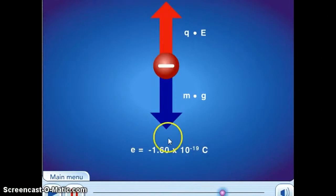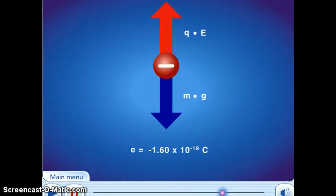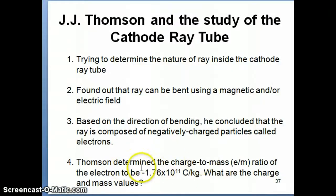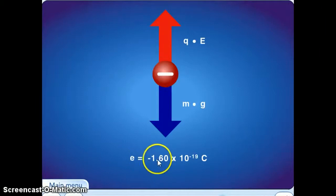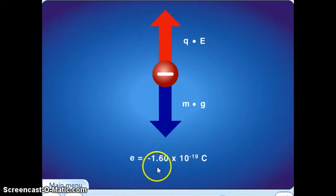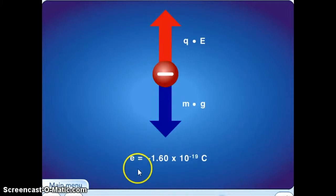Once Millikan determined the charge of one single electron, he could go back to the charge-to-mass ratio that Thomson found from his cathode ray experiment. Using that charge-to-mass ratio together with the charge value Millikan determined, and applying dimensional analysis, you can calculate the mass of an electron. I'll leave that as your homework: figure out the mass of a single electron using the charge-to-mass ratio and the charge that Millikan found.